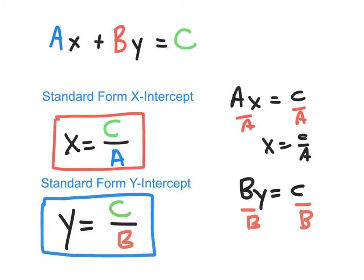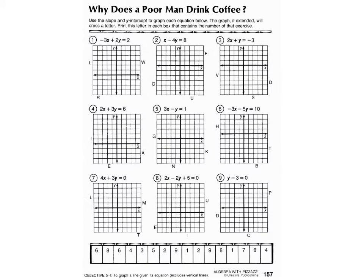We have an assignment today that we're going to work on in class. We're going to use these two formulas to quickly draw graphs of lines — we won't need x-y tables. If we can locate the intercepts, we can put the two dots down and draw the line. The assignment has lines all in standard form — all but one actually — and whichever letter the line points to, we put it in the box at the bottom to solve the puzzle: why does a poor man drink coffee?